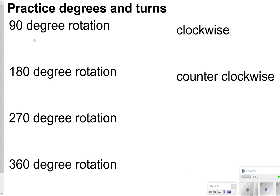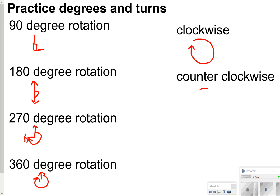A 90-degree rotation has 90 degrees. 180 degrees is a straight angle. 270 degrees is like a backwards 90 degrees. And 360 degrees is all the way around — you won't really do a 360-degree rotation. Clockwise goes in the fashion of a clock, and counterclockwise goes in the opposite direction.